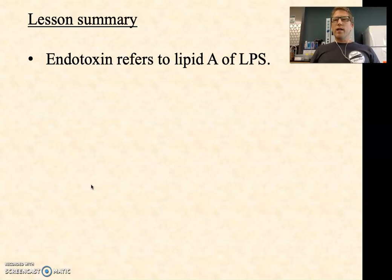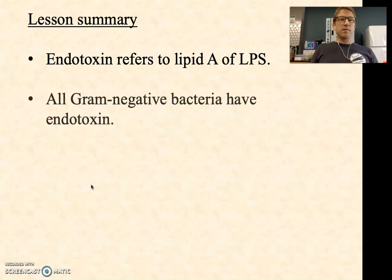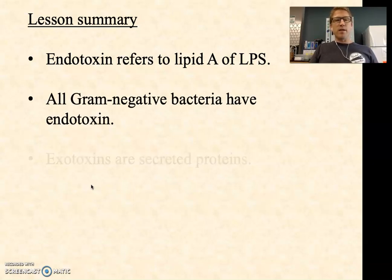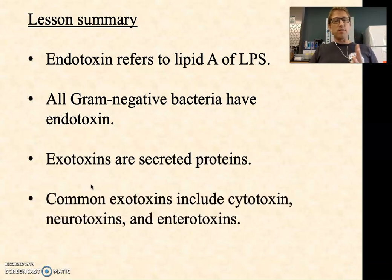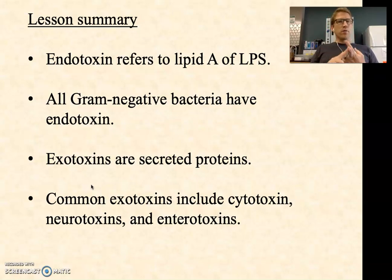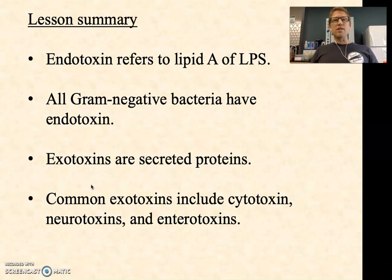Quick lesson summary: Endotoxin refers to lipid A of LPS, which means all gram-negative bacteria have endotoxin — important to keep in mind for gram-negative virulence. Exotoxins are secreted proteins with three main types: cytotoxins, which have multiple names like hemolytic toxins; neurotoxins that target nerve cells; and enterotoxins that attack the lining of the intestinal tract. That is part three — one more part to go.